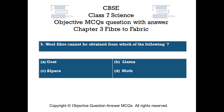Question number 5. Wool fiber cannot be obtained from which of the following? Option A Goat, Option B Llama, Option C Alpaca, Option D Moth.